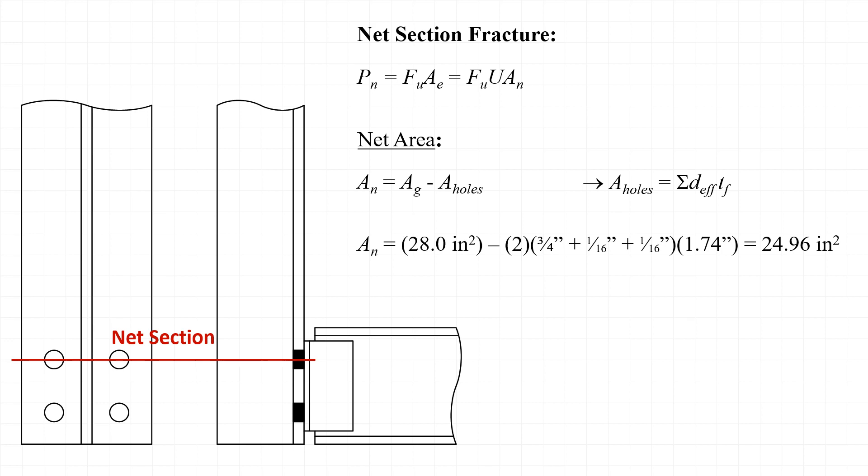So performing those calculations, we take the gross area 28 inches squared minus two bolt holes, each accommodating a 3/4 inch diameter bolt with a hole that's 1/16 of an inch larger than the bolt diameter. And then we add a second 1/16 of an inch to accommodate the potential for material damage during the fabrication of the holes. Finally, we multiply by the flange thickness of 1.74 inches and we end up with a net area of 24.96 inches squared.